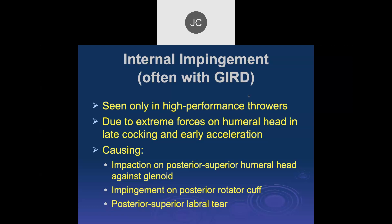An important form of impingement in overhead throwing athletes is internal impingement, often associated with GIRD — glenoid internal rotation deficit. Seen only in high-performance throwing athletes, it is due to extreme forces on the humeral head in the late cocking and early acceleration phase.